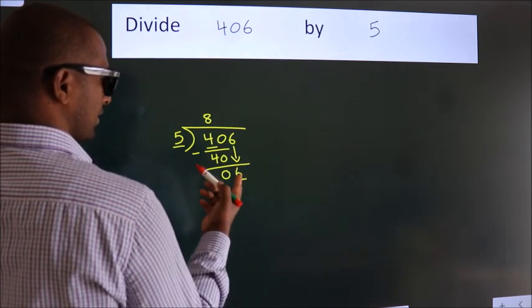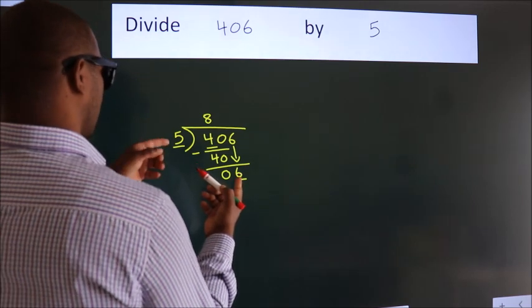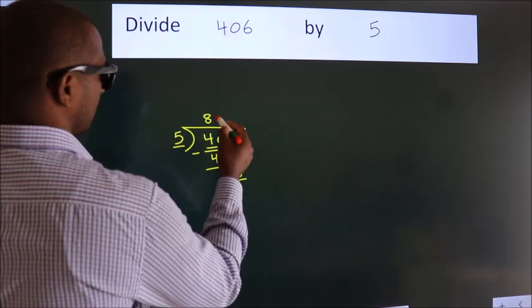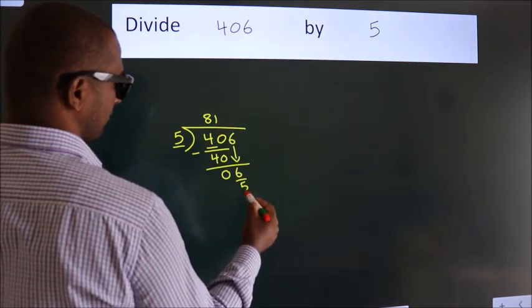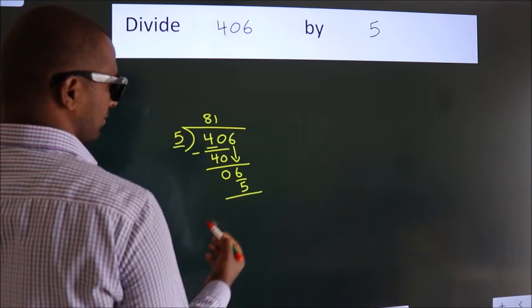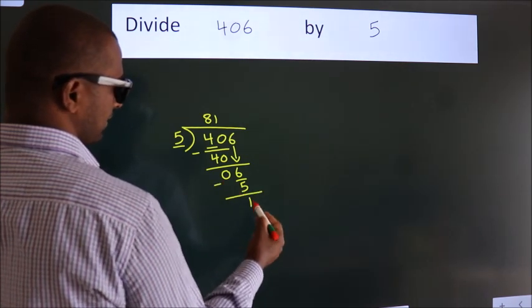A number close to 6 in 5 table is 5 ones, 5. Now we subtract, we get 1.